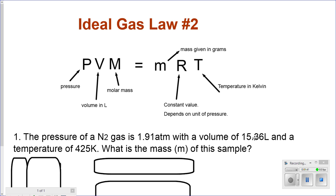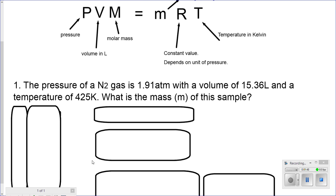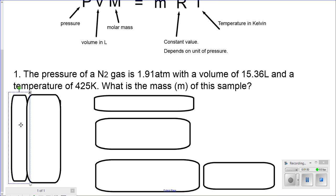My volume is in liters already, no need to change anything. And my temperature is already in Kelvin, nothing to change. So let's make a list of what we have: pressure, volume, temperature, molar mass, and R.